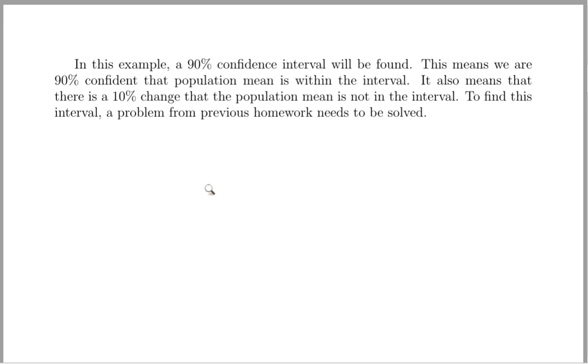In this problem, we'll look for a 90% confidence interval. And the idea there is to find an interval so that we're 90% confident that the population mean is within that interval. Of course, that also means that there's a 10% chance that the population mean is not in the interval.